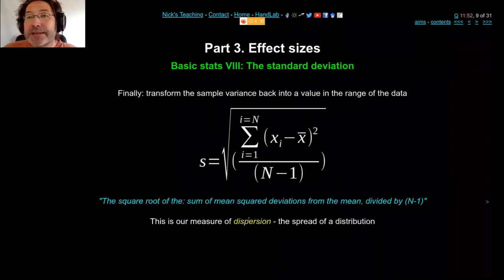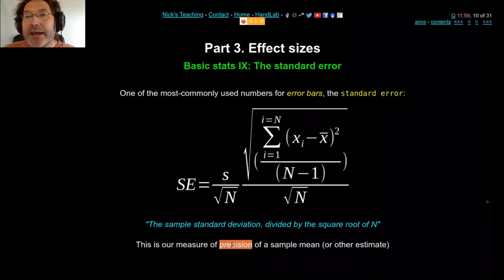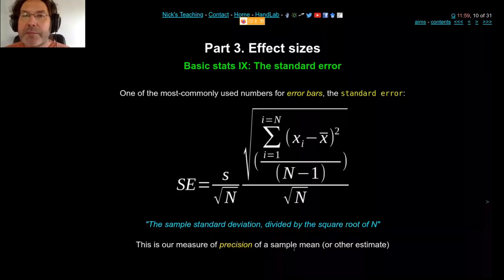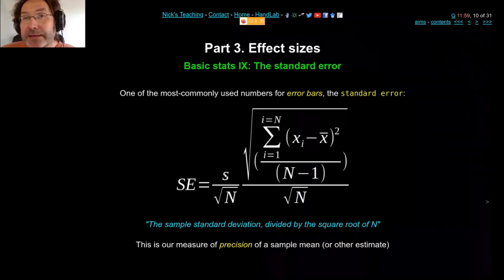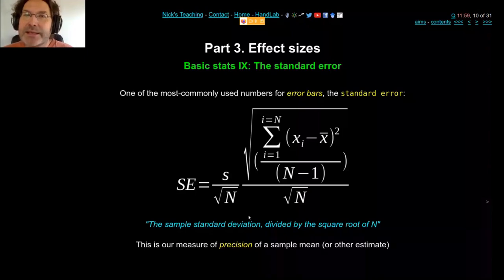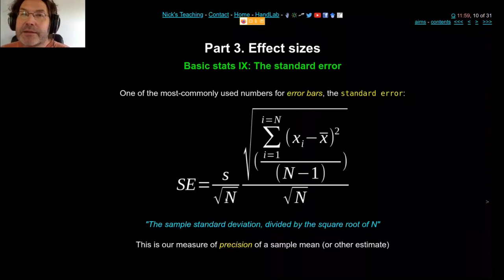The standard deviation is a measure of dispersion in general — how widely spread is your distribution. The standard error is a measure of the precision of a mean. A small standard error means you can be quite certain your mean estimate is precise; a large standard error means your data isn't very precise. To get a small standard error, you can either reduce variance or collect more data. These three numbers — mean, SD, and SE — tell you essentially everything in statistics: power analysis, meta-analysis, variability, and sample size requirements.